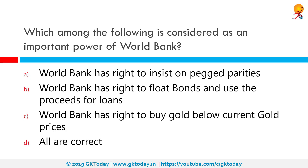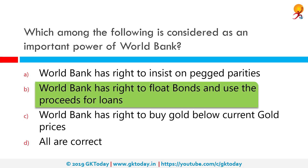Which among the following is considered an important power of the World Bank? The correct answer is the World Bank has the right to float bonds and use the proceeds for loans. Currently the World Bank has set two goals for the world to achieve by 2030: end extreme poverty by decreasing the percentage of people living on less than $1.90 a day to no more than 3%, and promote shared prosperity by fostering income growth of the bottom 40% for every country.